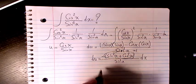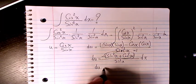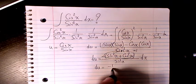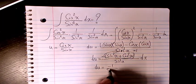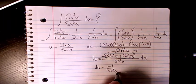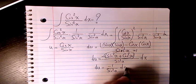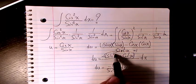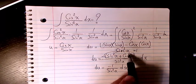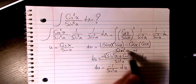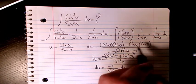These two together are going to be just one, so du will be negative one over sine squared x dx, because sine squared plus cosine squared always equals one.